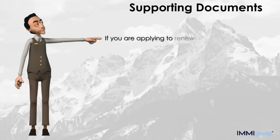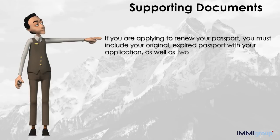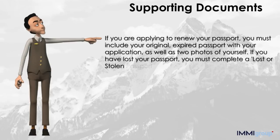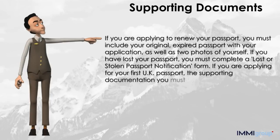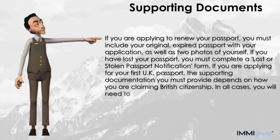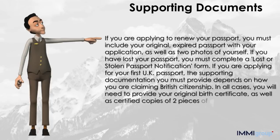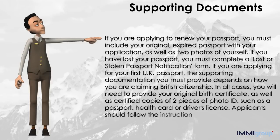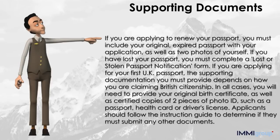If you are applying to renew your passport, you must include your original expired passport with your application as well as two photos of yourself. If you have lost your passport, you must complete a lost or stolen passport notification form. If you are applying for your first UK passport, the supporting documentation depends on how you are claiming British citizenship. In all cases, you will need to provide your original birth certificate as well as certified copies of two pieces of photo ID, such as a passport, health card, or driver's license. Applicants should follow the instruction guide to determine if they must submit any other documents.